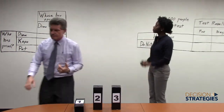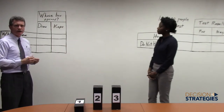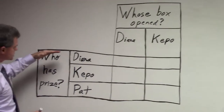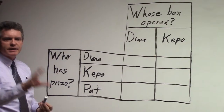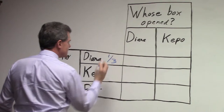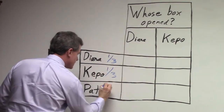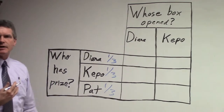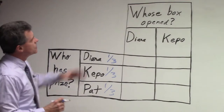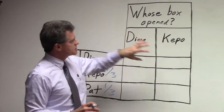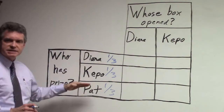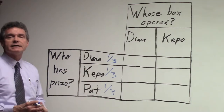We set up a little matrix over here to help you think your way through the problem. The thing to realize is as soon as Diana and Keppo chose their boxes, we can all agree that there was a one-third chance that Diana had it, a one-third chance that Keppo had it, and a one-third chance that it was under the remaining box that I had. The concept people need to realize is the probability of my lifting Diana's box versus lifting Keppo's box depends upon which of these three states of reality we're in at that moment — who actually has the prize.